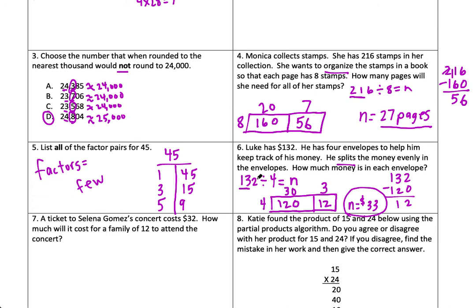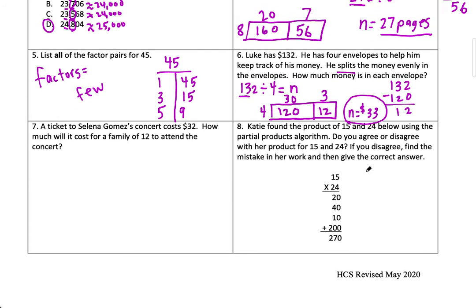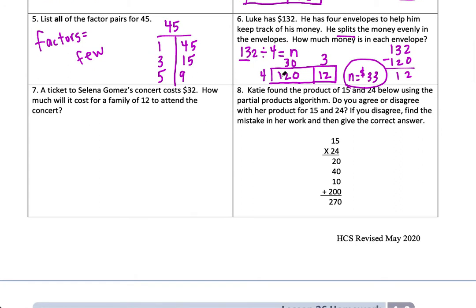Division with area models is getting easier. We'll look at different strategies this week, but I want you to learn this one — it's a great strategy for two- and three-digit dividends. I wouldn't recommend it for numbers in the thousands or ten-thousands place though. Think of an area model but backwards: you have the area, you have one dimension, and you're looking for the other.